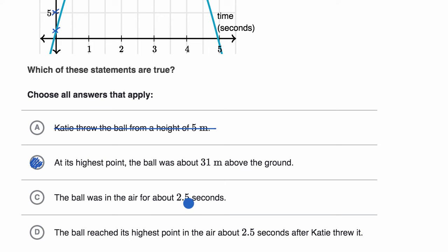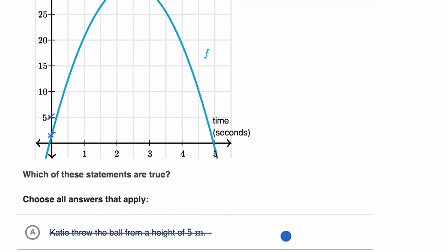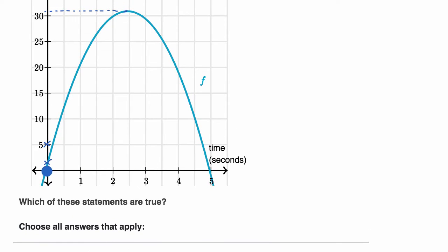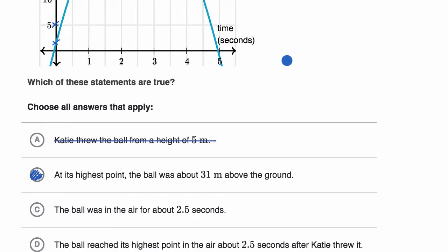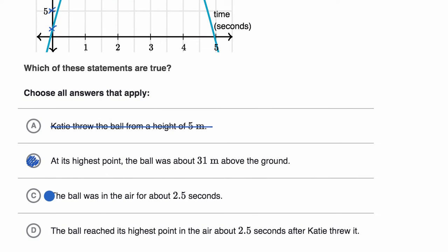The ball was in the air for about two and a half seconds. So we can clearly see that that is not the case. The ball was going up for about two and a half seconds, but then it was going down for roughly another two and a half seconds. And so it was actually in the air for almost five seconds. So I would rule this one out.